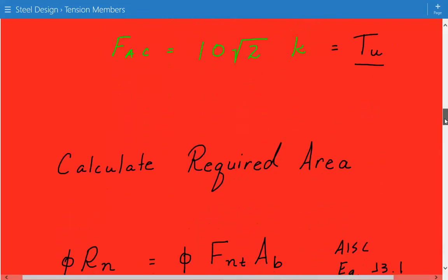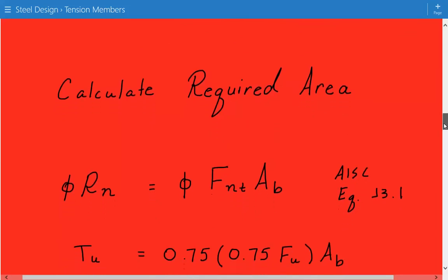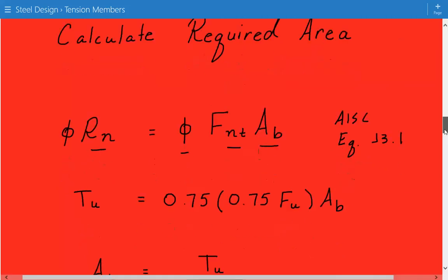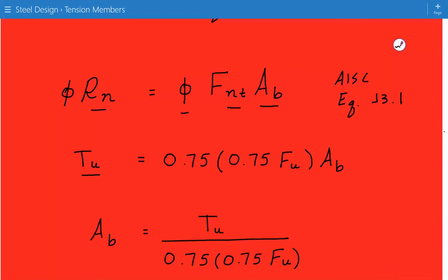Now we're going to calculate the required area of the threaded rod based on AISC equation J3.1. And here's the equation. So the design strength is equal to resistance factor times a nominal tensile stress times a nominal unthreaded body area of our threaded part, so the cross-sectional area. So our design loading is equal to the resistance factor of 0.75 times FNT, and FNT is equal to 0.75 times the ultimate tensile strength. And this is per table J3.2 in the 13th edition of the AISC manual.